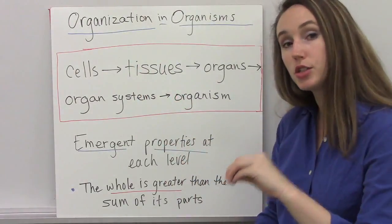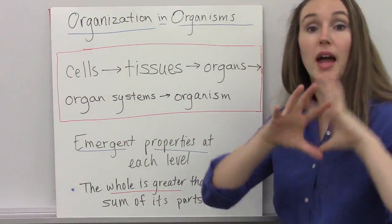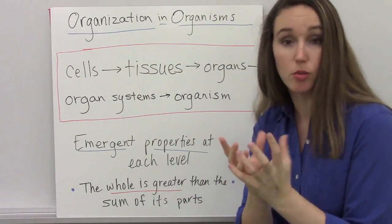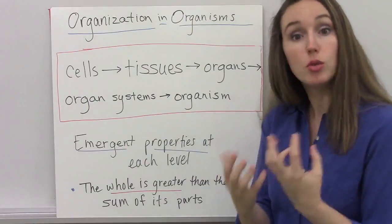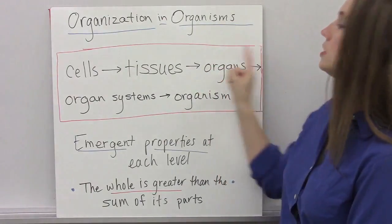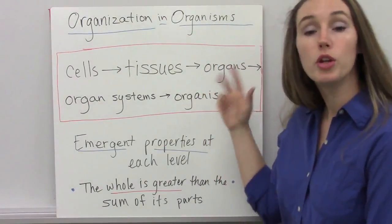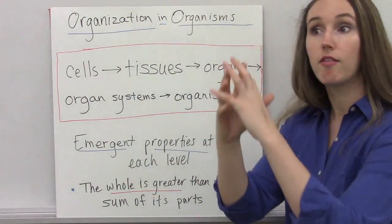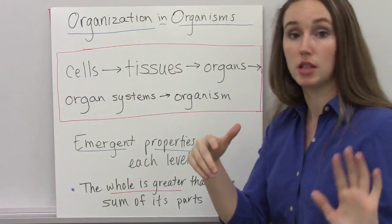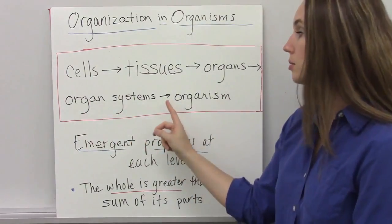And when you put those tissues together in a form that actually lets them do a function within the body, like the heart or the stomach or the lungs, those actually can do a job, that forms an organ. When you put organs together, different organs that function for a similar duty within the body, you get an organ system.